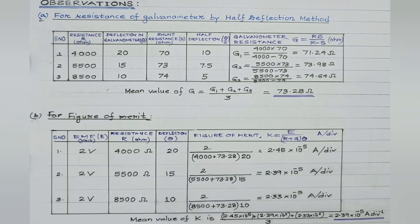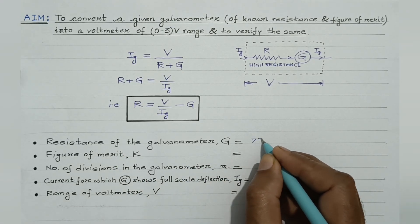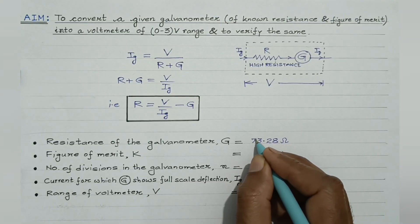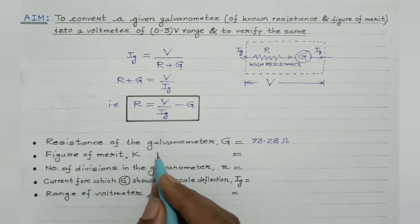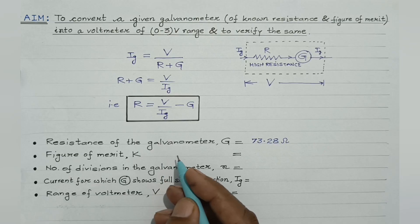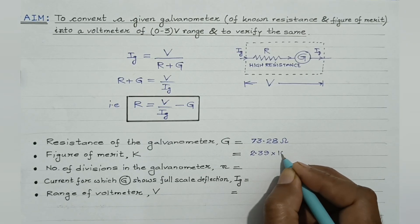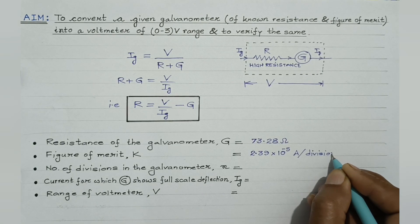After recording the observations in a table, the resistance of the galvanometer is obtained to be 73.28 ohm. We can also obtain the figure of merit of the given galvanometer. The resistance of the galvanometer, capital G, determined using the half deflection method, is 73.28 ohm. The figure of merit — the current required to produce one division of deflection — is obtained to be 2.39 × 10⁻⁵ ampere per division.